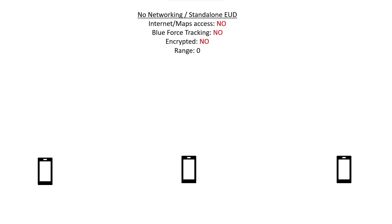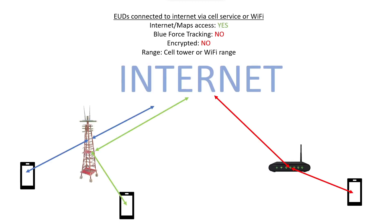The first instance is if you have a device that does not have access to the internet at all and is not networked at all. The next instance is if you have a device or several devices that do have access to the internet, but you haven't networked them right — like they're not on a server.